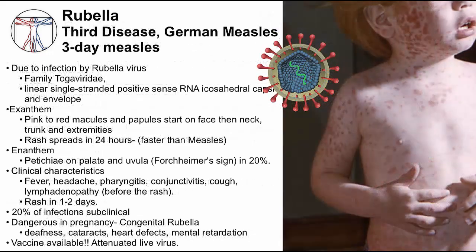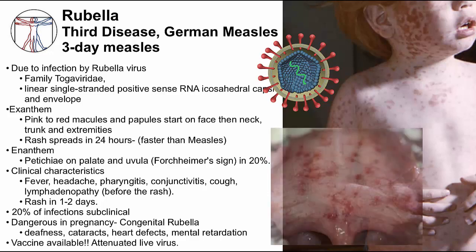Third disease is otherwise known as rubella, also called German measles or three-day measles. Rubella is caused by rubella virus in the Togavirus family — it is enveloped with an RNA genome. The exanthem consists of pink-red macules and papules that start on the face and spread to the trunk and extremities, much like measles. However, rubella spreads much faster, over about a 24-hour period. Rubella can also have an associated enanthem called Forscheimer spots — petechial lesions on the palate, sometimes the uvula, as pictured on the slide.